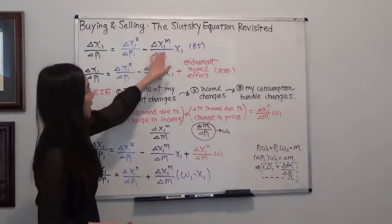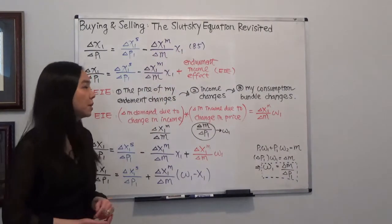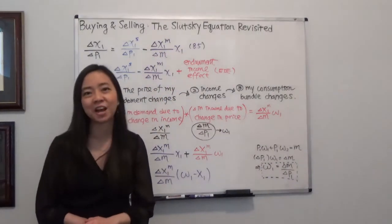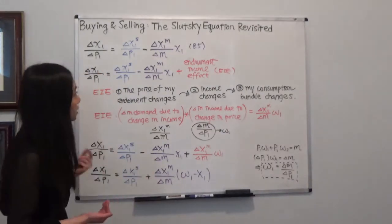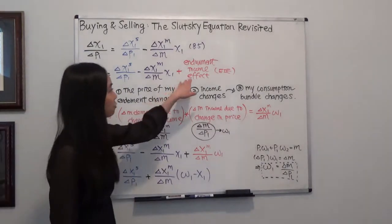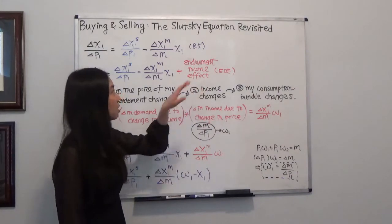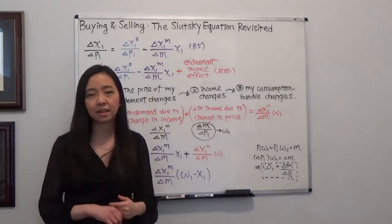So that's what we ended up with. And now in chapter 9, we have buying and selling. Therefore, our Slutsky equation is going to have one extra term that is called the endowment income effect. So what is that?